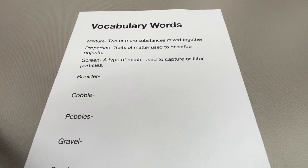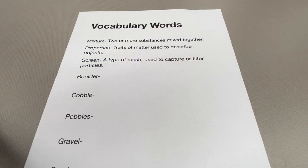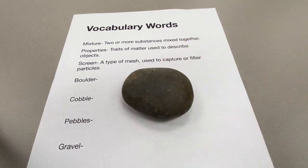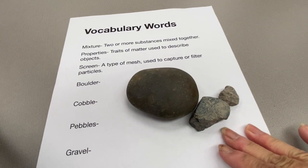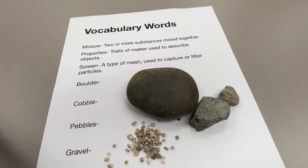Now let's review our vocabulary words for today. Mixture: a mixture is two or more substances that are mixed together. Properties: properties are traits of matter used to describe objects. Screen: a screen is a type of mesh used to capture or filter particles. Boulder: a boulder is anything 10 inches across or greater. And boulders break apart to become cobbles. And cobbles break down into pebbles. And pebbles break down into gravel. And gravel breaks down into sand.